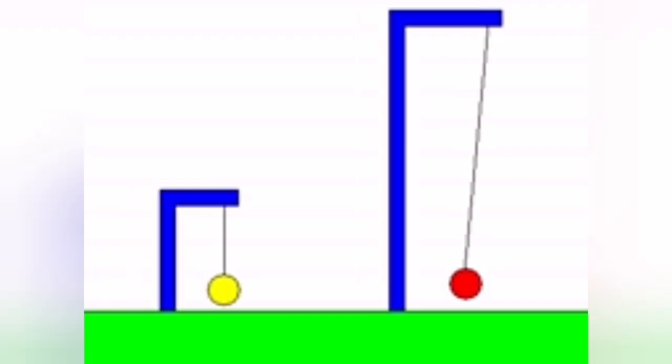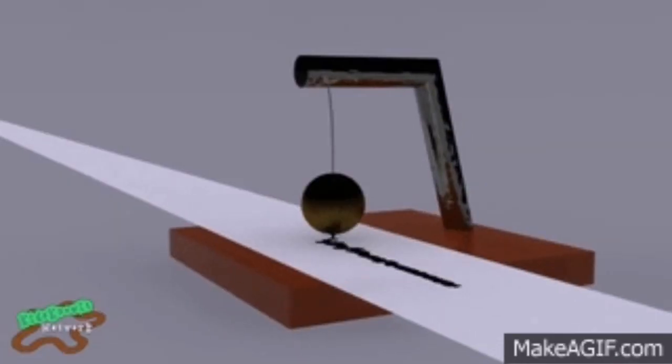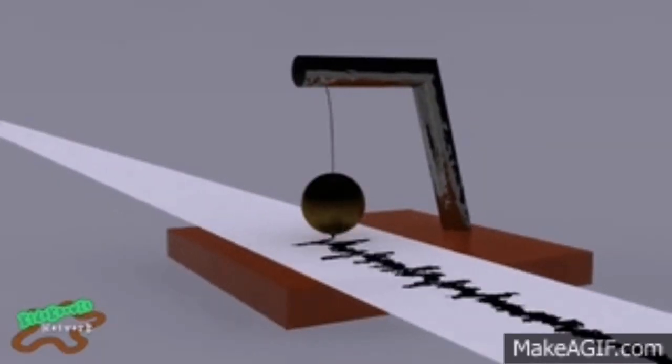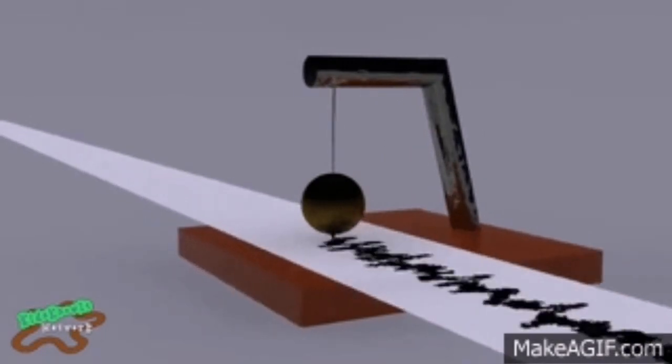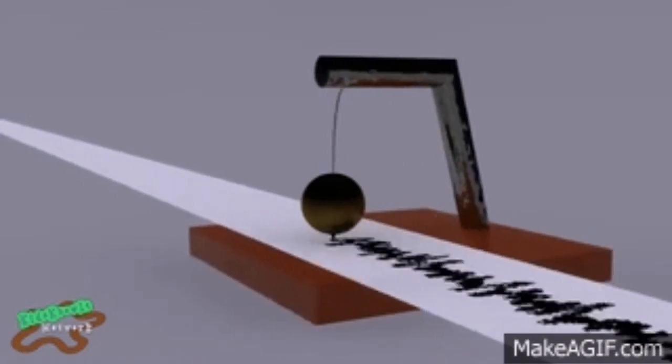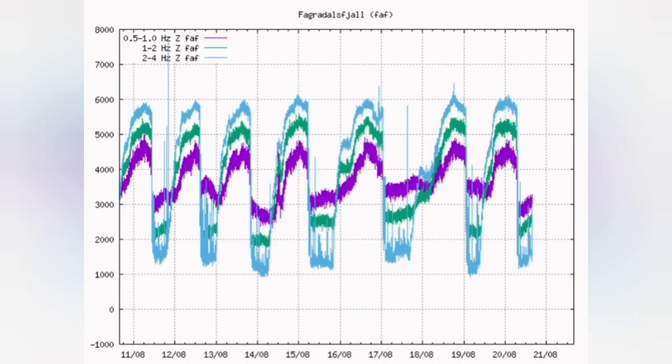A seismograph is practically a mass which, due to inertia, stays in its place when the base of it and the land which is attached to it moves. If you attach a pen to this mass, during the tremors, it will create these patterns that you see here.